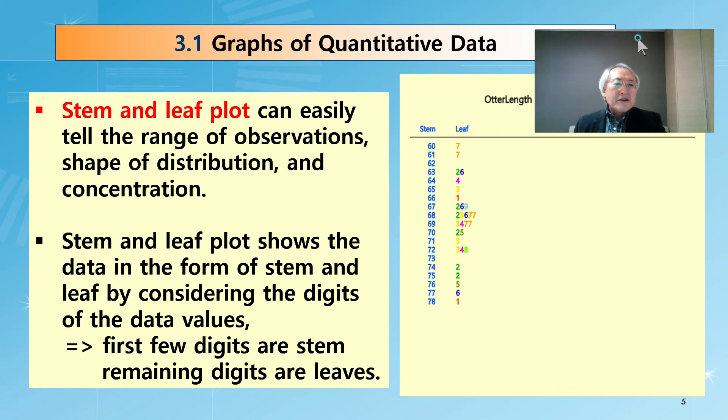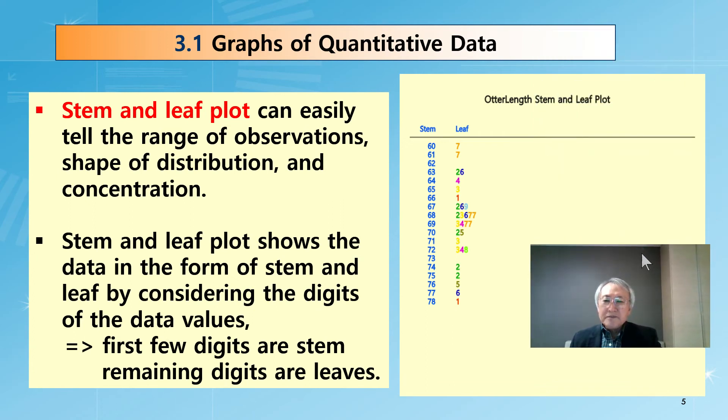The third graph is similar to histogram. In case of quantitative data, it is a real number. Therefore, usually we can divide it into some digits. In this case, it is 607, 617, like that. Maybe three digit numbers.